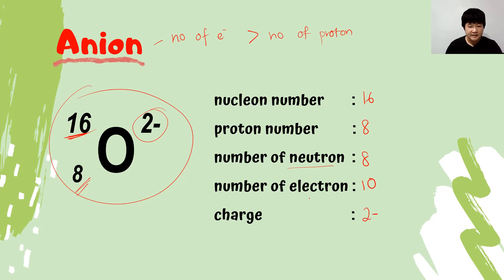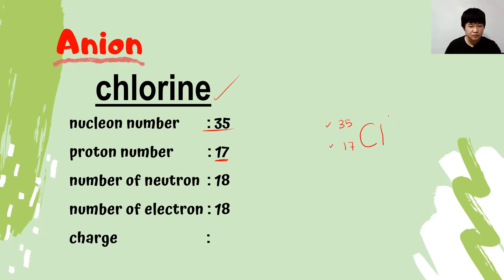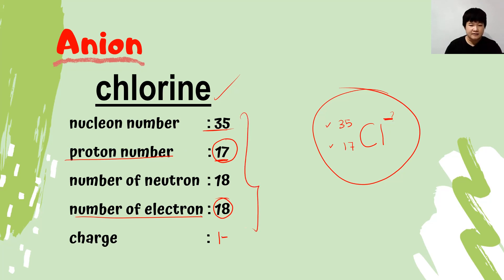Now let's write the isotope notation for an anion using chlorine as the example. The symbol is Cl. The nucleon number is 35, placed on top. The proton number is 17, placed below. To find the charge, we compare the proton number and electron number. The proton number is 17 and the number of electrons is 18, so electrons exceed protons by 1. Therefore the charge is 1−. That is the complete isotope notation for this anion.